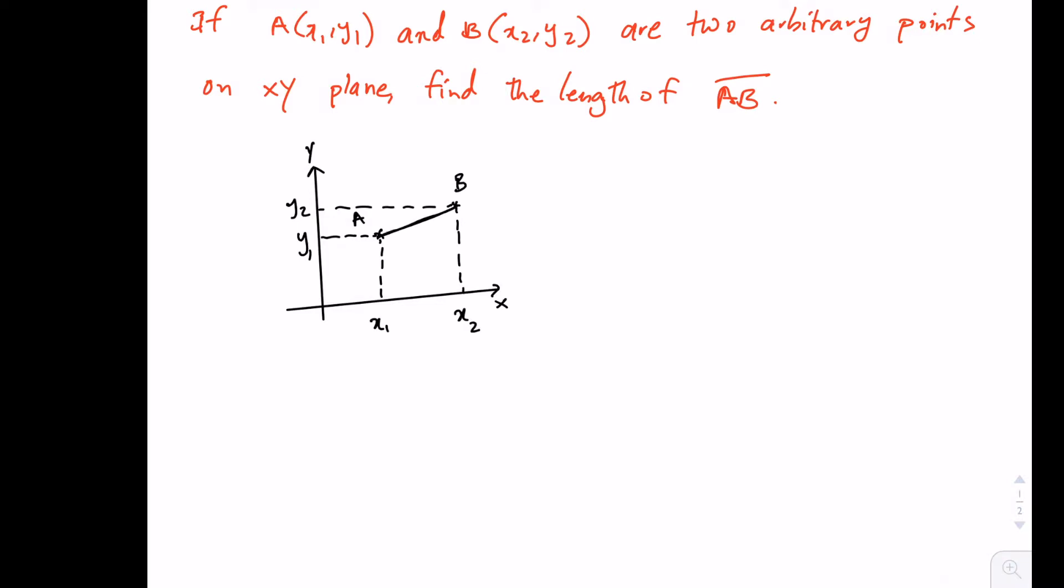And we want to find the length of the line segment AB that they form. So in order to do that, we can see that if we call this point C, the triangle ABC that is formed here is a right angled triangle. And therefore we can write this length squared plus this length squared equals to this length squared. And that is from the Pythagoras theorem.